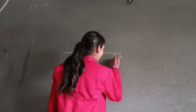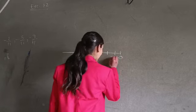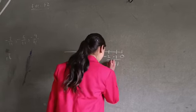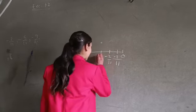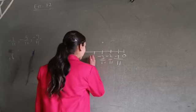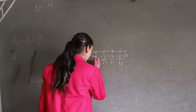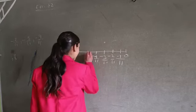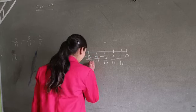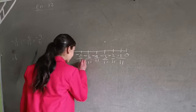Starting from minus 4 upon 11, minus 2 upon 11, minus 3 upon 11, minus 4 upon 11, minus 5 upon 11, minus 6 upon 11.